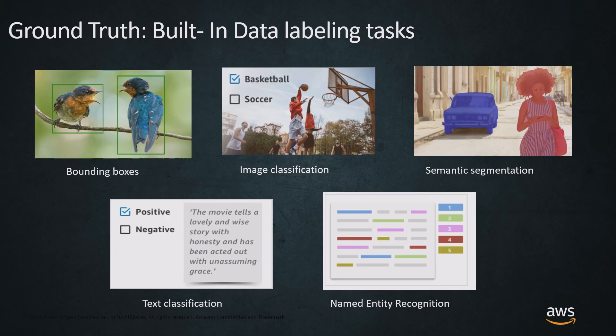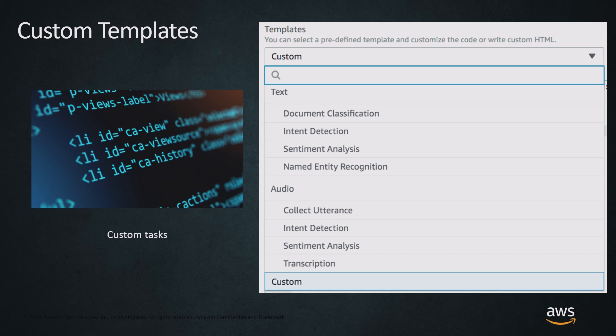There are five built-in data labeling tasks on SageMaker Ground Truth. First is bounding boxes — you can draw bounding boxes to identify something within an image. There's also image classification, where you take an image and classify it. Semantic segmentation draws pixel maps around everything in your picture. Text classification lets you drop text into a bucket. And recently, named entity recognition lets you identify entities within your text files. There are also many custom templates for text and audio files — you can bring your own HTML or use a provided custom template.